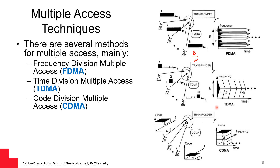The third scenario is called CDMA, or code division multiple access, where users utilize the entire bandwidth for the whole duration but use different codes. These codes are orthogonal and are designed to minimize interference to each other.